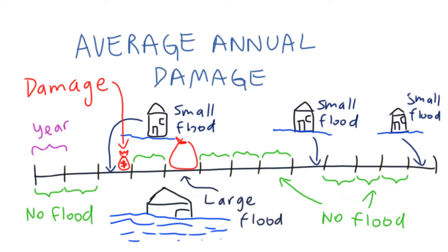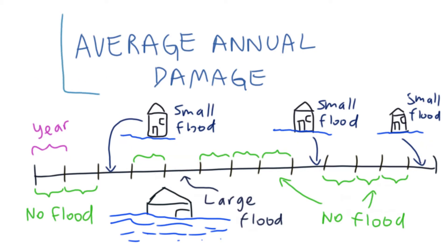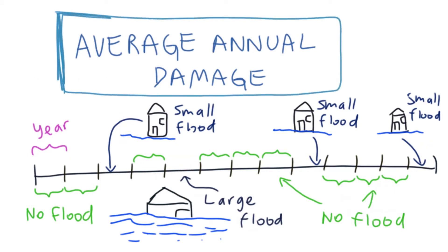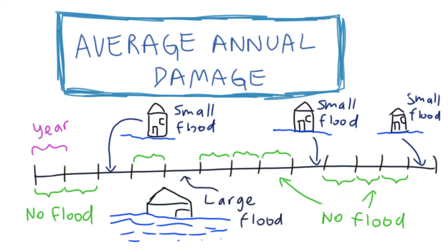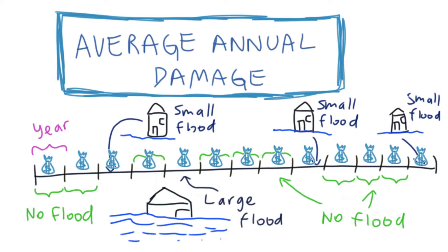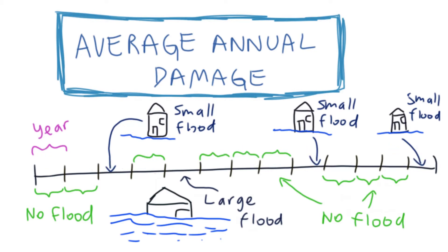In many years there may be no floods, so no damage at all. In some years there may be minor damage caused by small floods, and in some years there may be major damage caused by large but very rare flood events. So to be able to measure the economic effectiveness of different management options against floods of all sizes, we estimate the average annual damage and look at the ability of each mitigation option to reduce this average annual damage.